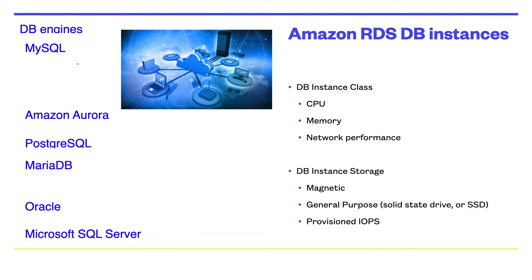When you choose to create a database instance, you must first specify which database engine to run. Amazon RDS currently supports six database engines: MySQL, Amazon Aurora, Microsoft SQL Server, PostgreSQL, MariaDB, and Oracle Database.